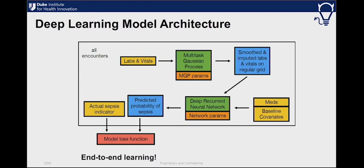Now we actually needed to build the model and the technology. This was a collaboration with Katherine Heller and Joe Futoma in the statistics department. It was a two-phase model: the first phase imputed continuous functions for the labs and vital signs, then regularly sampled every hour and fed into a recurrent neural network. Every hour we generate predictions for whether or not the patient will become septic.